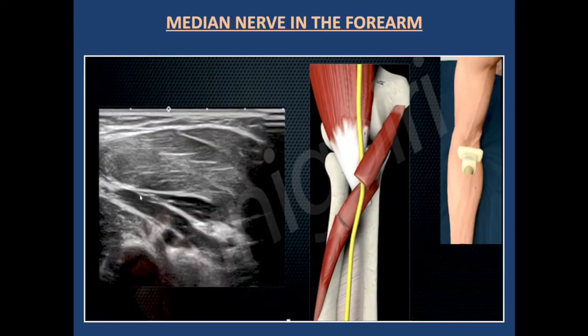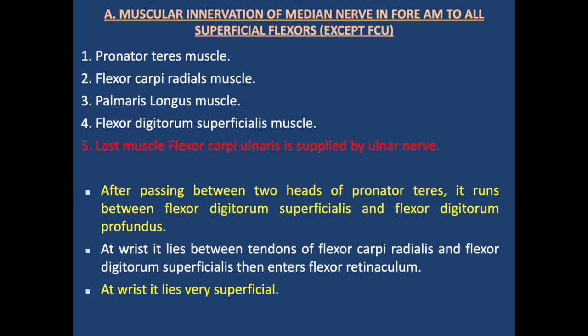This diagram shows the sonoanatomic view of the median nerve in the cubital fossa, where we can see the 'eye sign' when it passes through the two heads of the pronator teres muscle. The muscular innervation in the forearm covers all superficial flexors except flexor carpi ulnaris.